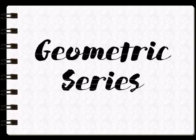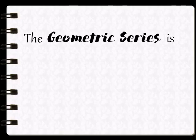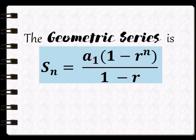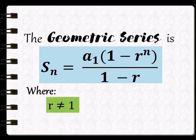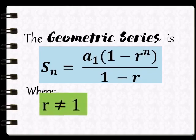Next topic, geometric series. The geometric series is s sub n is equals to a sub 1 times the quantity of 1 minus r raised to n divided by 1 minus r, where r is not equal to 1. So, ang geometric series ay ang sum of geometric sequence.